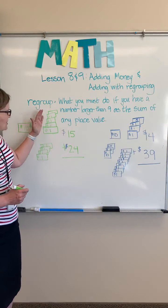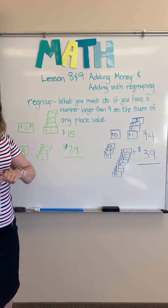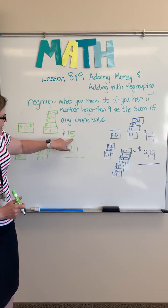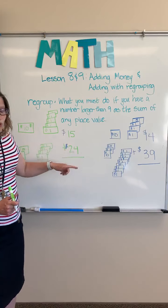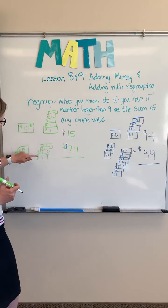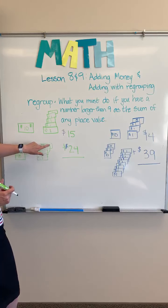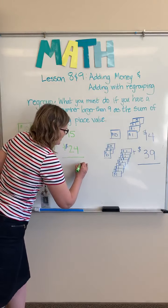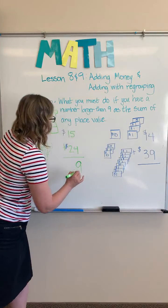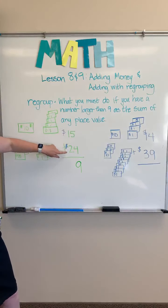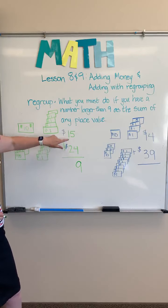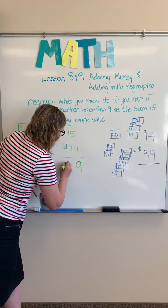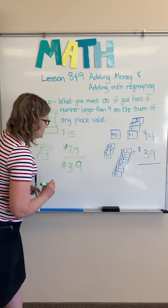So our first thing is we add up the ones. I know that five plus four is nine, but you could also count: one, two, three, four, five, six, seven, eight, nine. Nine. I'm also looking — two plus one is three. And our answer is $39.